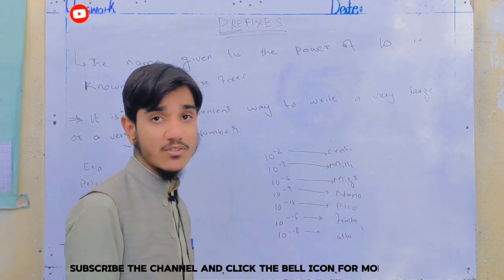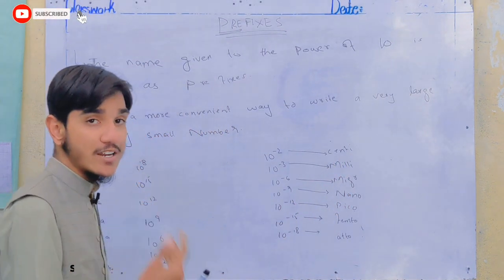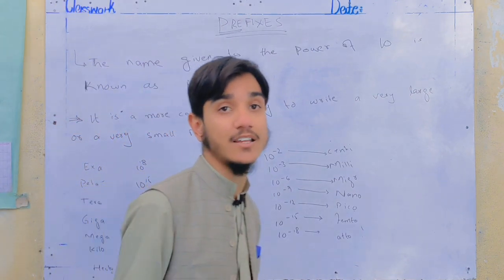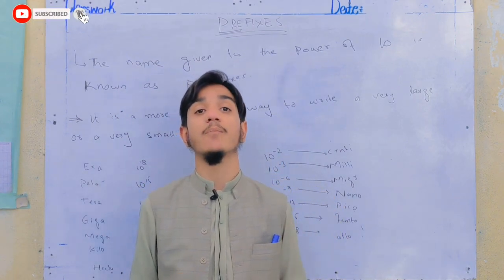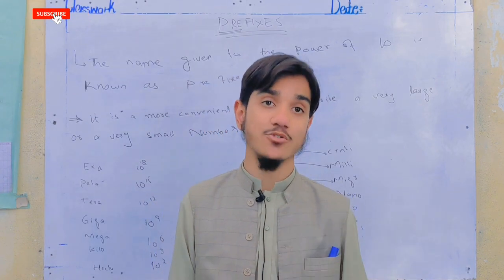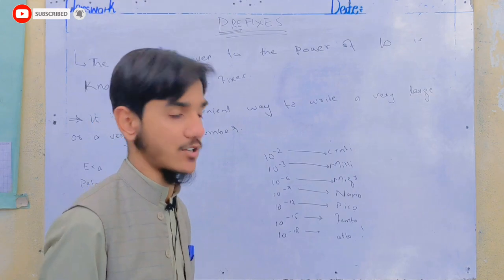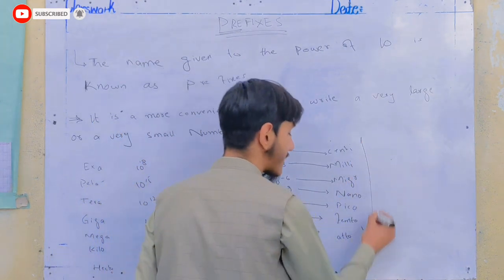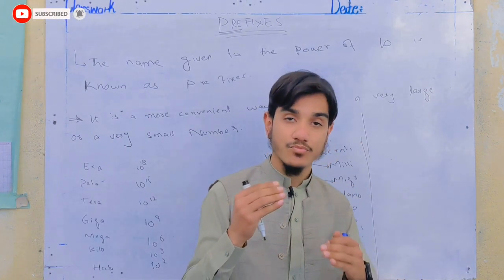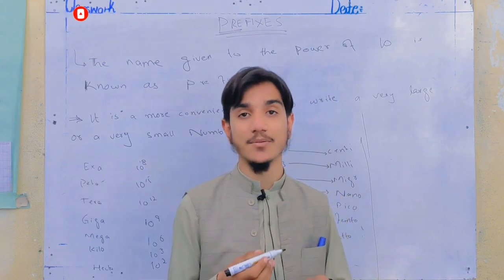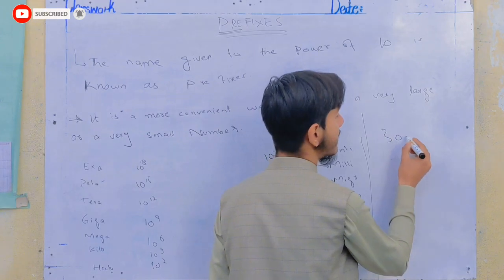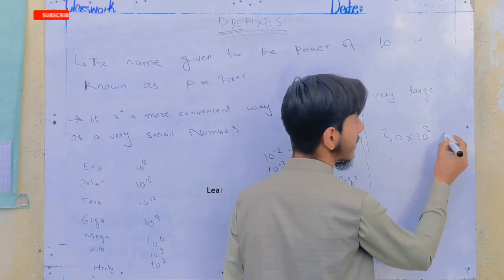The prefixes are given names for specific powers of 10. For example, this is 30 km. We can write that as 30 times 10 raised to the power 3 meters. The prefix kilo, which represents 10 to the power 3, gives us 30 kilometers.